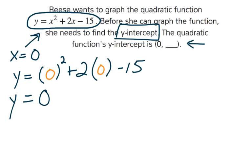y equals 0 squared is just 0, and then 2 times 0 is also just 0. I still have a minus 15 at the end. The 0 plus 0 is nothing, and when you subtract 15 from there, you get negative 15.